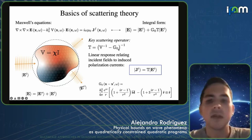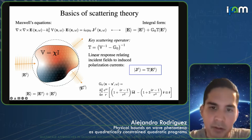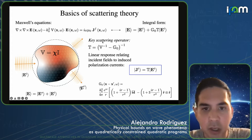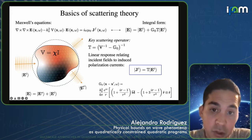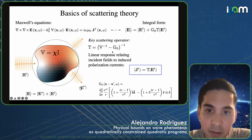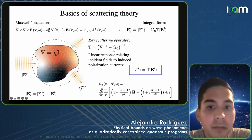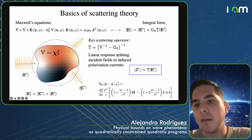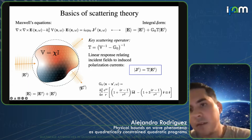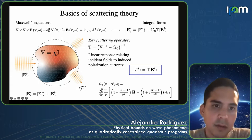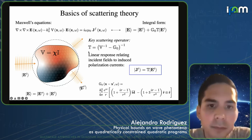The Lippmann-Schwinger representation of the T operator is basically a perturbative expansion of this operator, which encodes the potential and the propagating physics of the fields. The T operator is just another way to write an integral form of the differential form of Maxwell's equations.